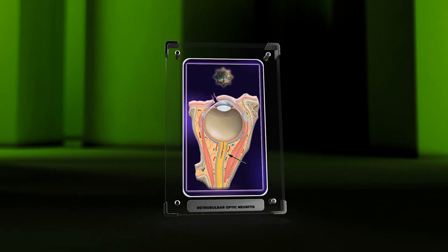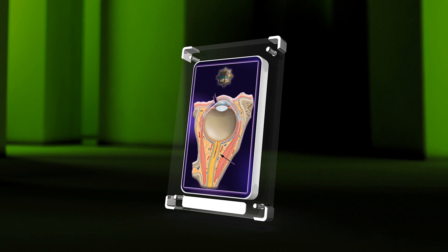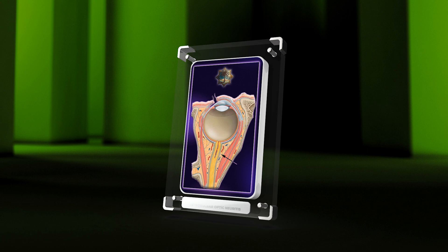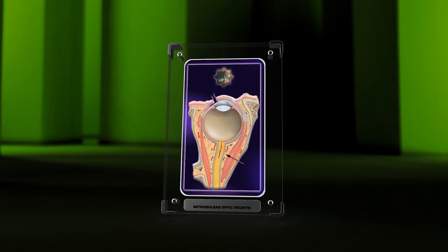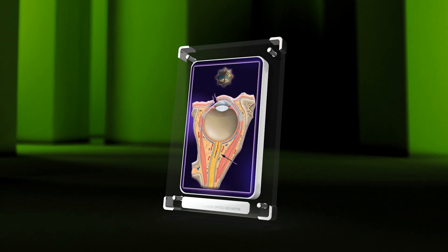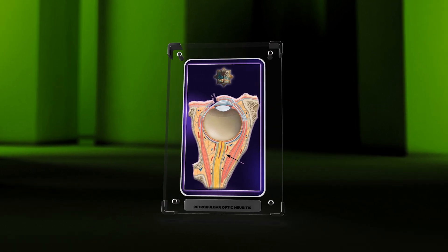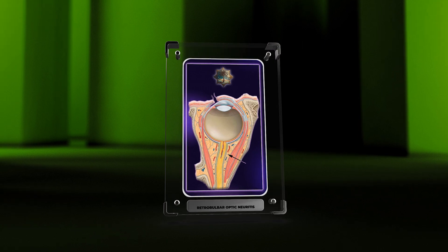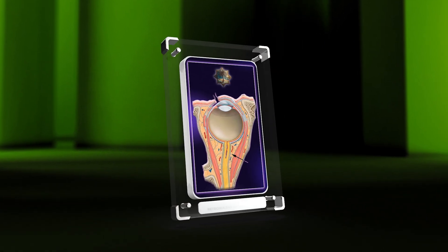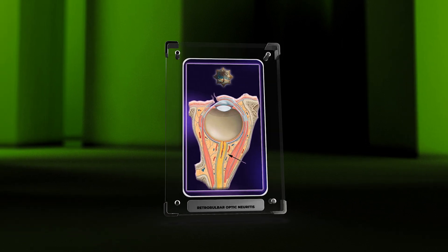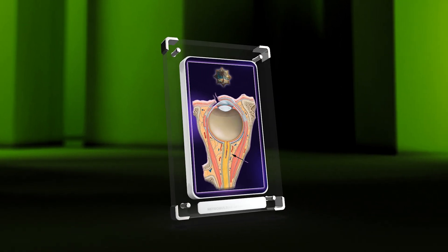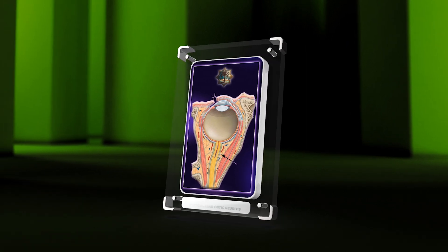In summary, retrobulbar optic neuritis is a condition causing sudden vision loss due to inflammation of the optic nerve, often linked to viral infections and autoimmune disorders. A comprehensive ophthalmic evaluation, visual field testing, and MRI findings help diagnose it. Corticosteroids are crucial for acute management, and long-term treatment focuses on addressing underlying conditions like multiple sclerosis. Regular follow-up and personalized treatment strategies are important for optimal visual outcomes. Thank you for watching, and I encourage you to learn more about ophthalmology.